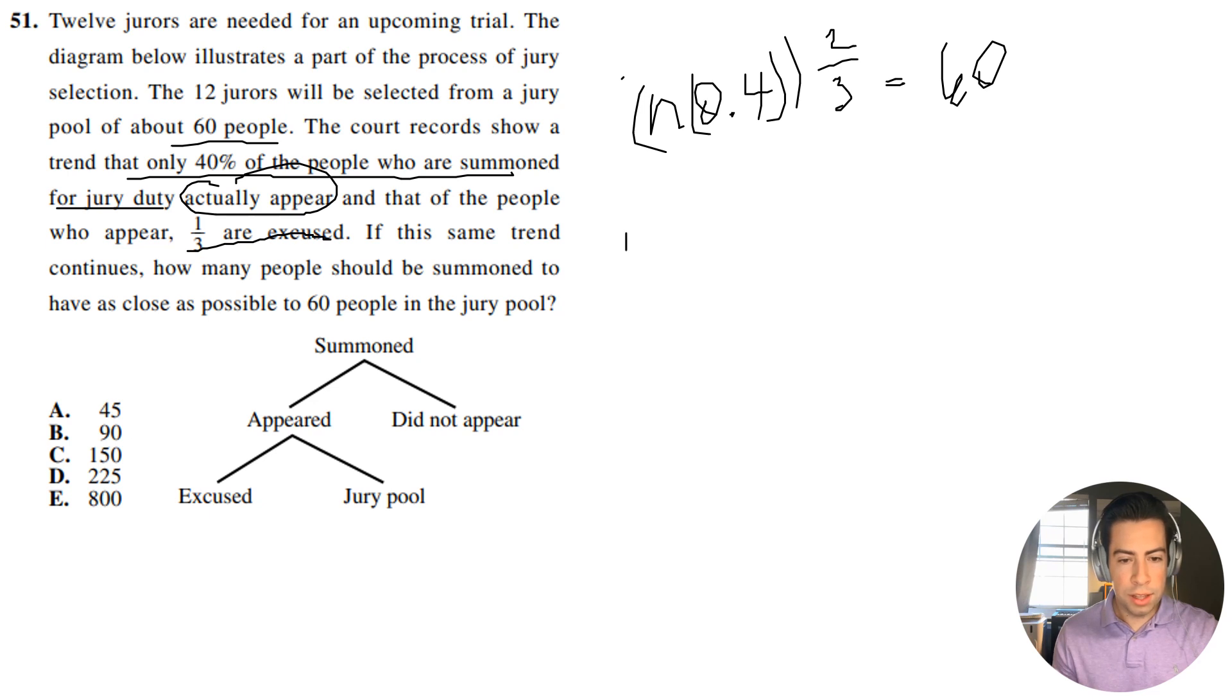So we're going to have n, and then the 0.4 is just 4 tenths. So n times 4 tenths multiplied by two-thirds has to equal 60. So I'm going to have n multiplied by 8 thirtieths, and that's going to have to equal 60.